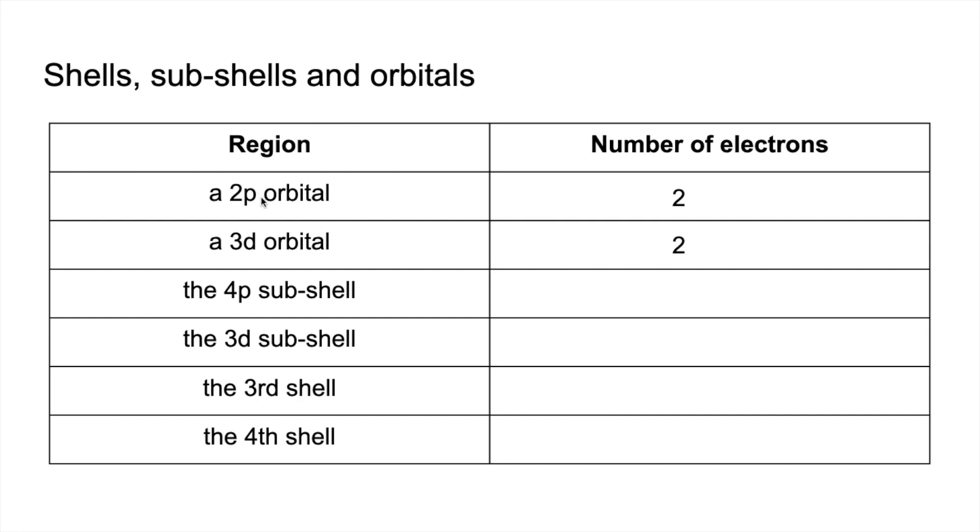Common mistake here that I see as a teacher is students would put six there because they're thinking of p and they'd go for ten for d. But because it's an orbital, it's only two.